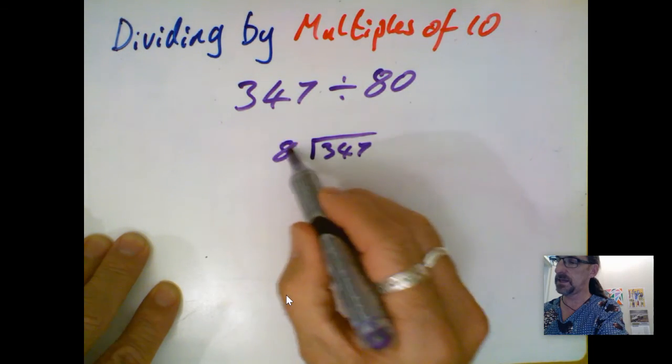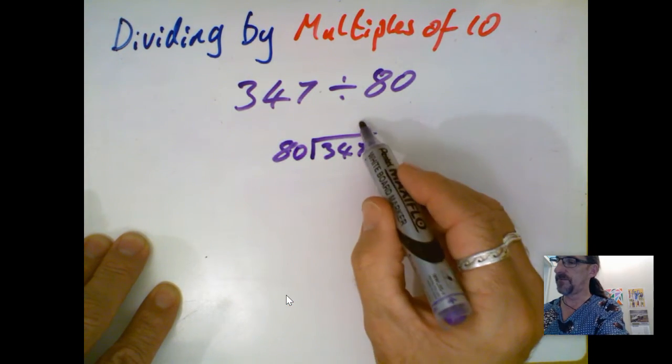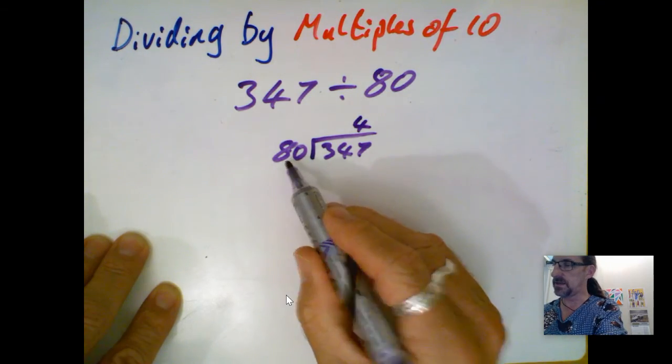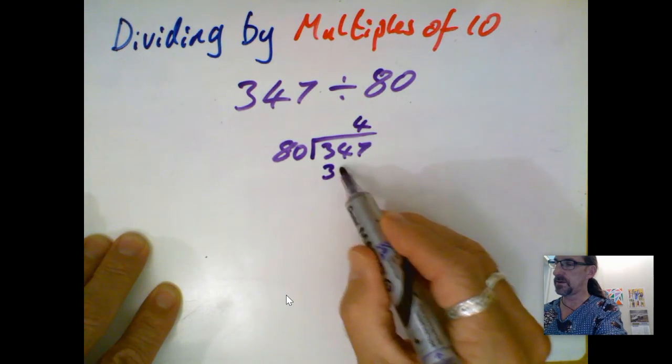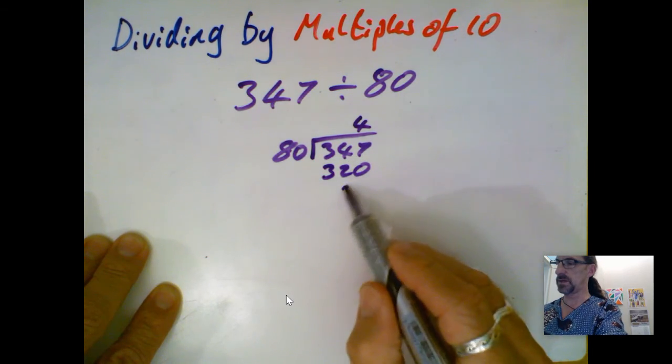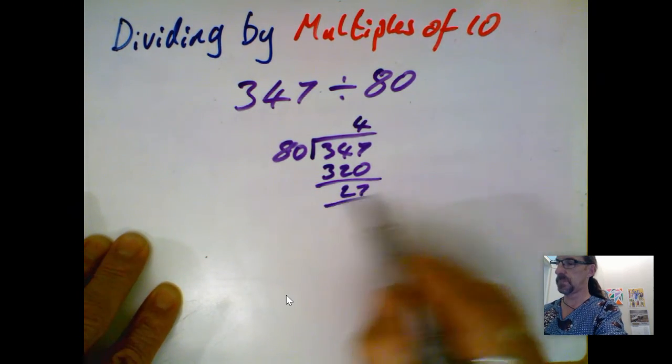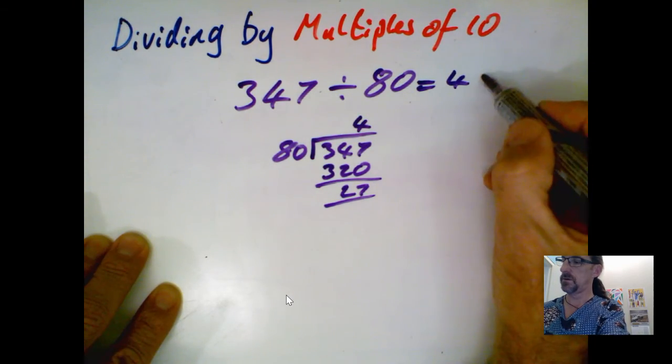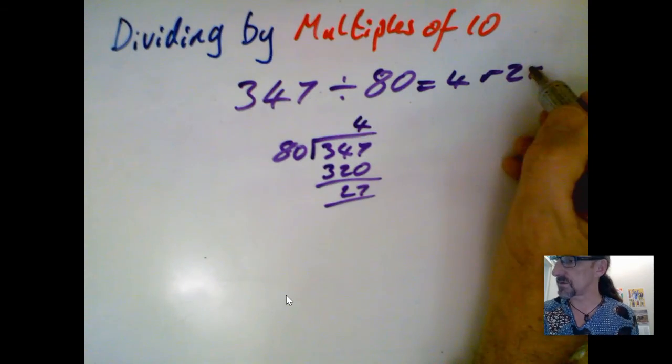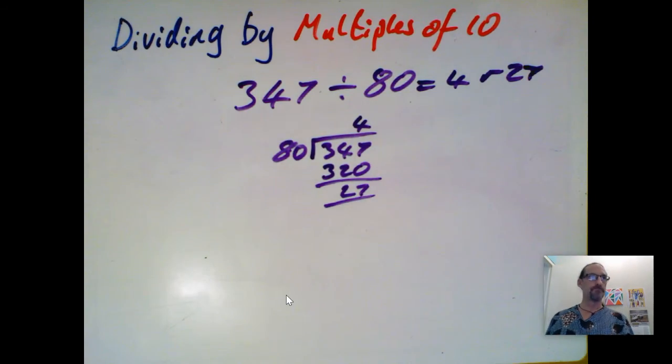347 divided by 80. So I had four lots of 80 was 320. When I take away, I can see I've got 27 left over. So this is four with 27 remaining. This is a terrible seven. There you go.